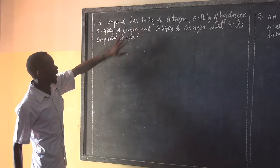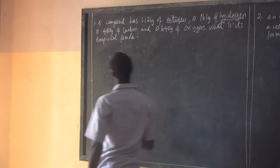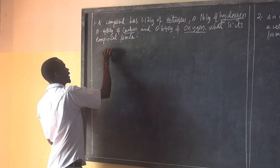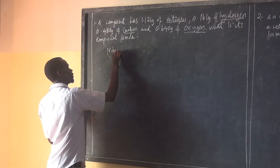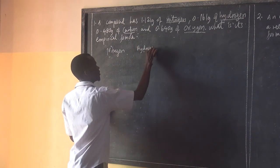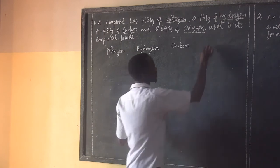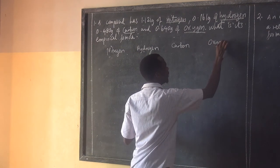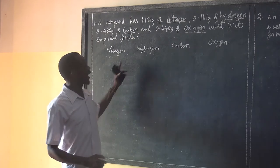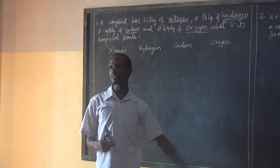A compound has nitrogen, hydrogen, carbonate and oxygen. In other words, a compound is made up of nitrogen, hydrogen, carbon and oxygen. This compound is made up of four elements. There are four elements there.